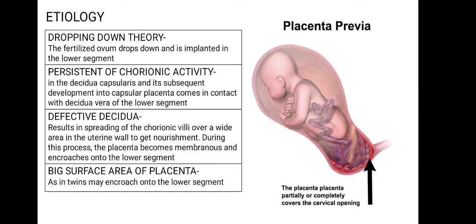The next theory is defective decidua — there is a deficiency in the pregnant uterus which results in the spreading of chorionic villi over a wide area in the uterine wall to get nourishment. In this process the placenta becomes membranous and encroaches onto the lower segment. The fourth theory is a large surface area of the placenta, generally noted in twin pregnancies, where the placenta can encroach into the lower segment.